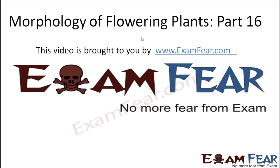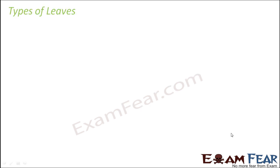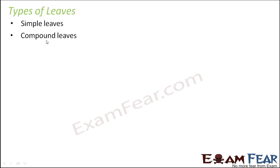This video on morphology of flowering plants part 16 is brought to you by examfear.com. Let us now talk about the types of leaves. So far we talked about the parts of a leaf, the different shapes of lamina, and venation. Now we will see what are the different types of leaves. Broadly, leaves are divided into two types: simple leaves and compound leaves.